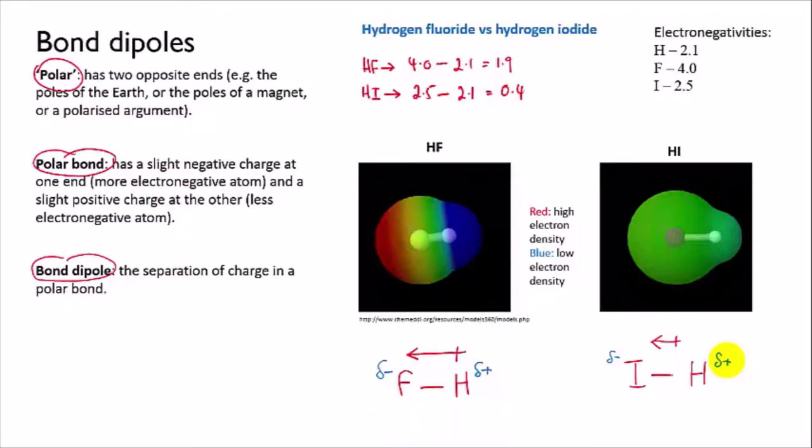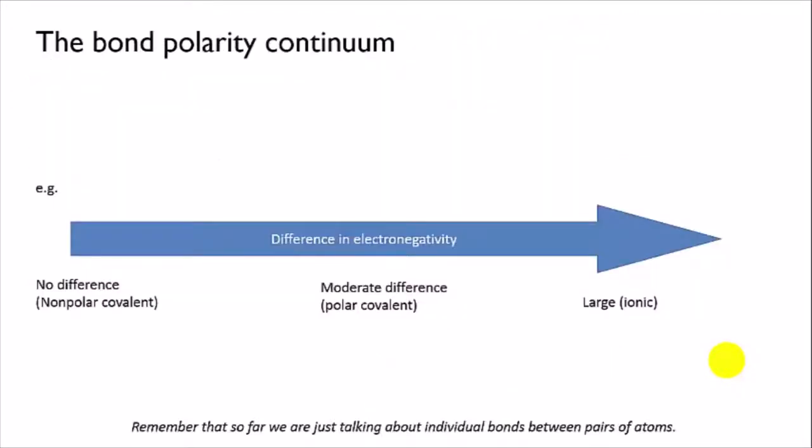In fact we can place them on a continuum. At one end are the completely non-polar covalent bonds between two identical atoms, and then as we increase the difference in electronegativity between the two atoms...